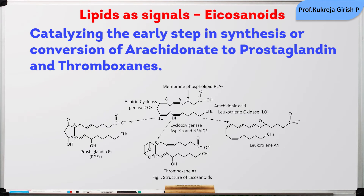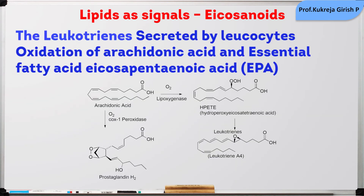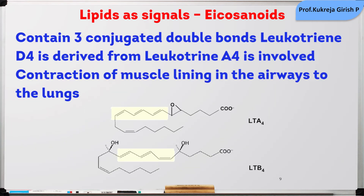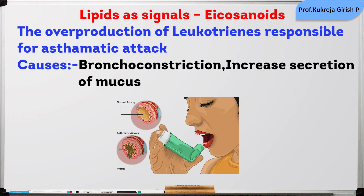Leukotrienes are secreted by leukocytes. These are obtained by the oxidation of arachidonic acid and the essential fatty acid eicosapentaenoic acid. These contain three conjugated double bonds. Leukotriene D4, derived from Leukotriene A4, is involved in the contraction of muscle lining the airways to the lungs.